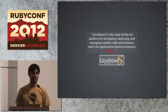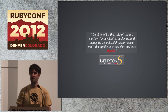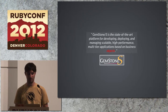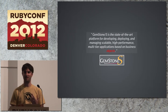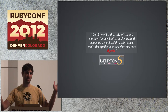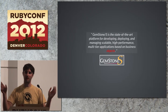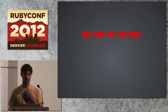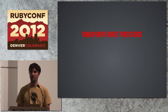Gemstone S, the product, is basically a Smalltalk VM that has a built-in object database. It's used in mission-critical applications all across the world. UBS uses it, Jack in the Box uses it — which I think is mission critical — and OOCL, a shipping container company, uses it to manage millions of shipping containers worldwide.